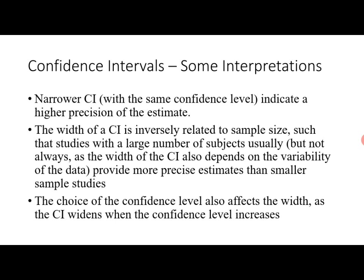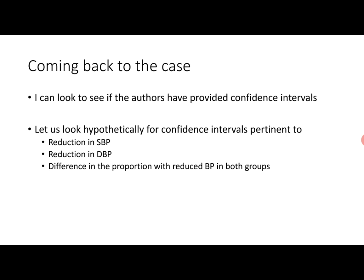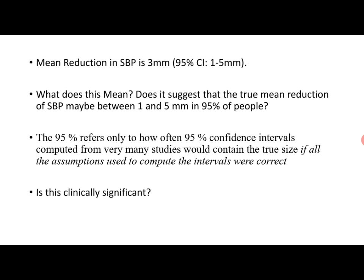Coming back to the case: if I can't use p-values, let me look at confidence intervals. The paper reports a mean reduction in systolic blood pressure of 3 mm with a 95% CI of 1 to 5 mm. What does that mean? Does it suggest the true mean reduction may be between 1 and 5 mm? The 95% refers to how often 95% confidence intervals computed from many studies would contain the true effect — correct if all assumptions used to compute the intervals were correct.